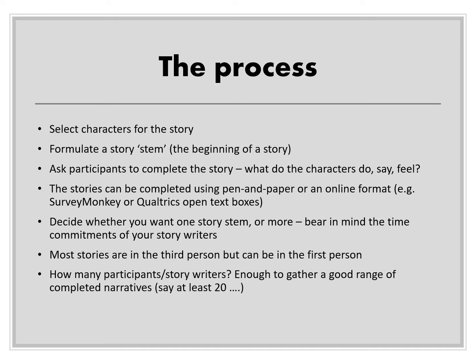Here are the basic ways that you conduct a story completion project. First, you select the characters for the story — you decide whether to give the character a gender, an age, an ethnicity, or a country, though you may choose not to specify any of these. You then formulate a story stem, which is the beginning of a story: a sentence or two outlining the character and their situation. Then you ask participants to complete the story — what do the characters do, say, and feel.